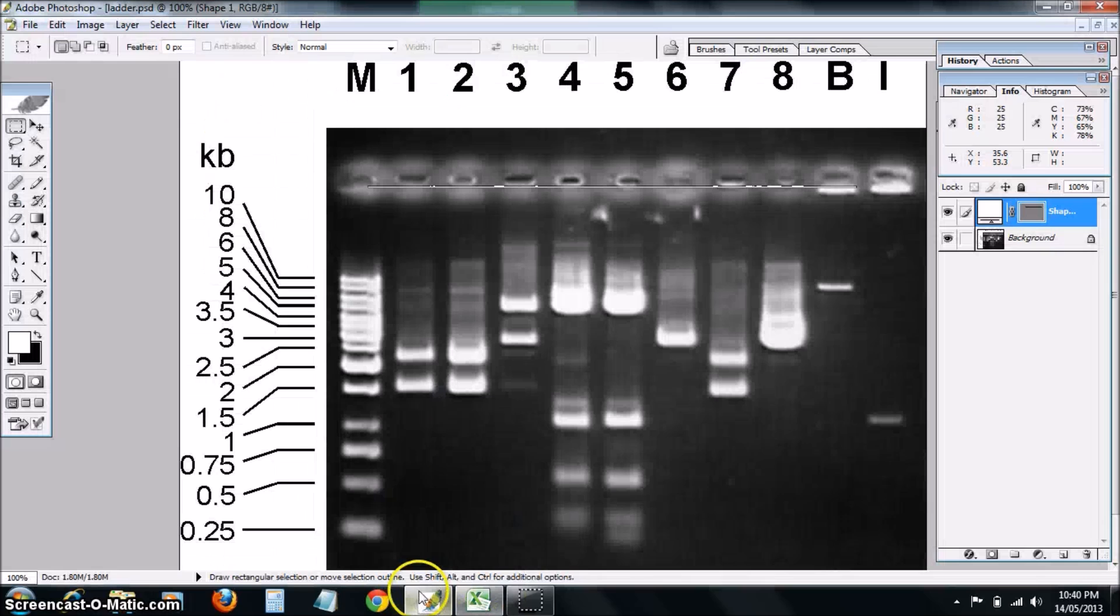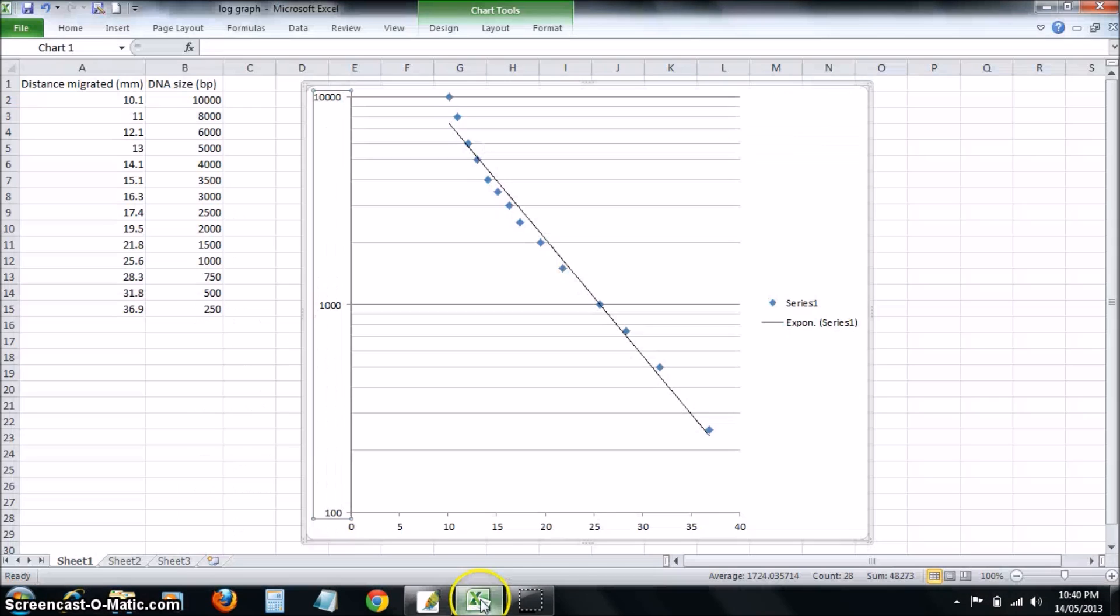You will measure how far your piece of DNA has gone. By working out on the x-axis how far it's gone, you can put a line up to the line of best fit and then across. That will tell you approximately how big your DNA fragment is.